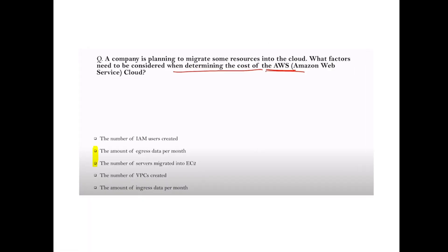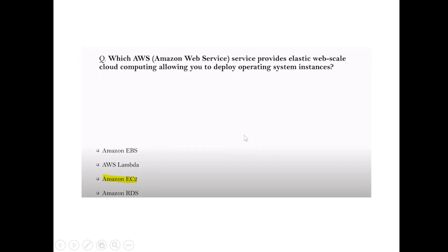Question: A company is planning to migrate some resources to the cloud. Which factors should be considered? Answer: The amount of workloads migrated to EC2 from on-premises and the egress data per month. Question: Which AWS service provides elastic web-scale cloud computing allowing you to deploy operating system instances? Answer: EC2.